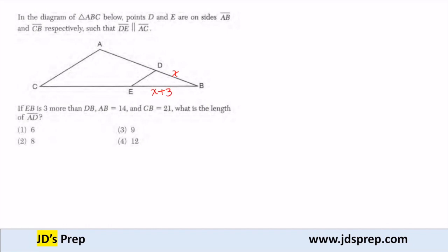AB is 14, so this whole side is 14, and CB is 21, so this whole side is 21. We're trying to find AD.